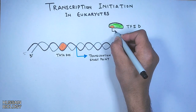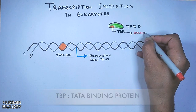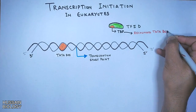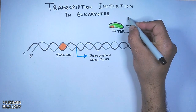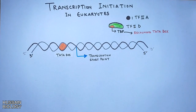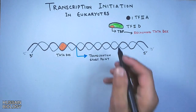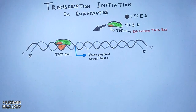TF2D has a TBP region — that's the TATA-binding protein. This TBP region is able to recognize the TATA box, and this recognition is aided by another transcription factor, TF2A. TF2D recognizes the TATA box on the DNA and binds to it, as shown in the diagram.